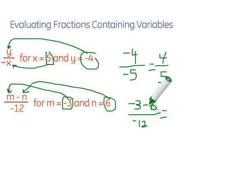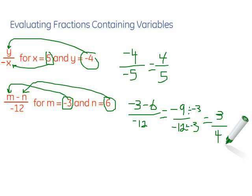So negative 3 minus 6 is negative 9 over negative 12. Now we have negative 9 and negative 12. We can divide both of those by negative 3, top and bottom. And that gives us negative 9 divided by negative 3 is 3, over negative 12 divided by negative 3 is 4. So we have 3 fourths.